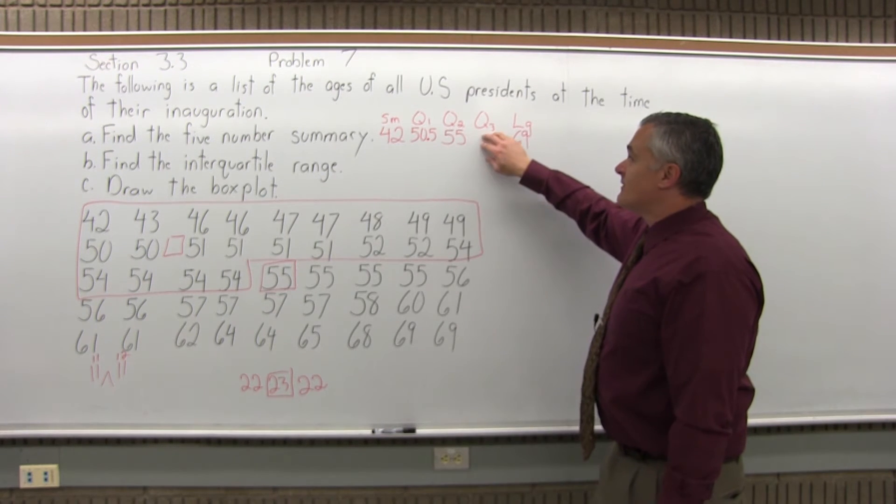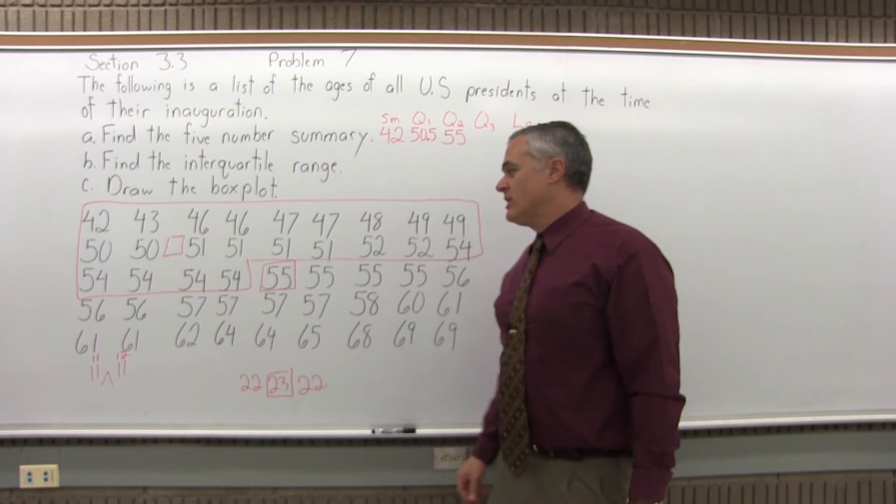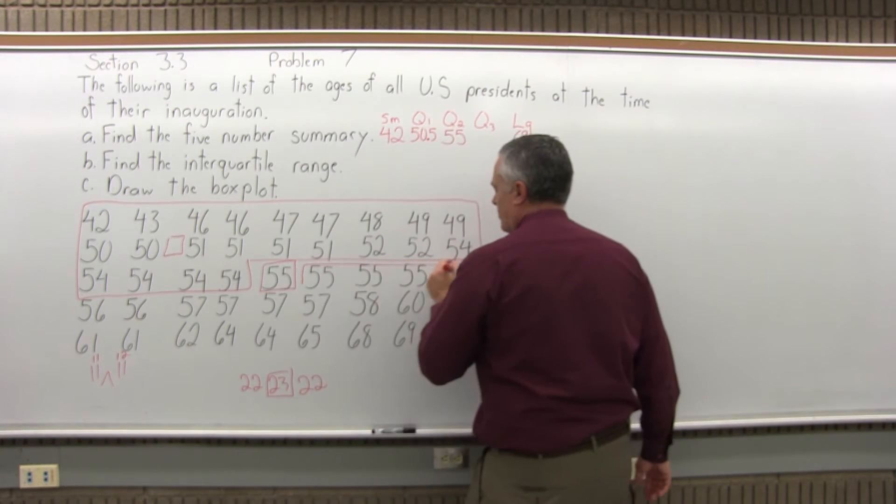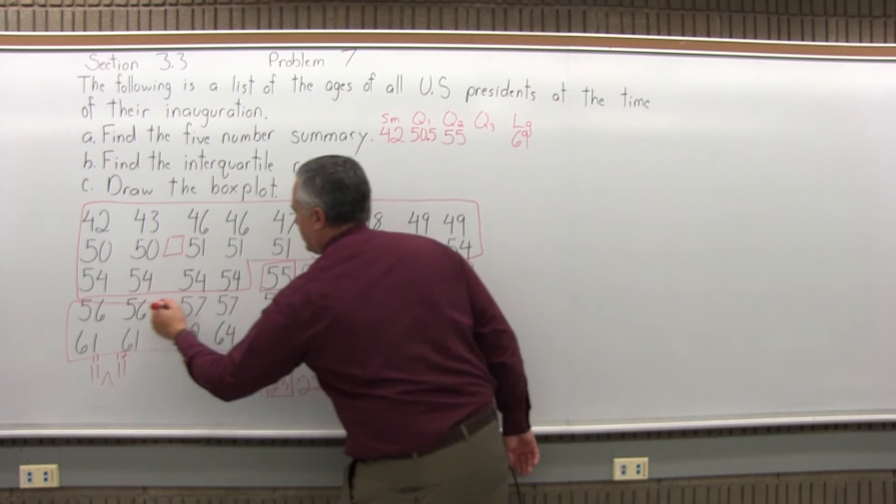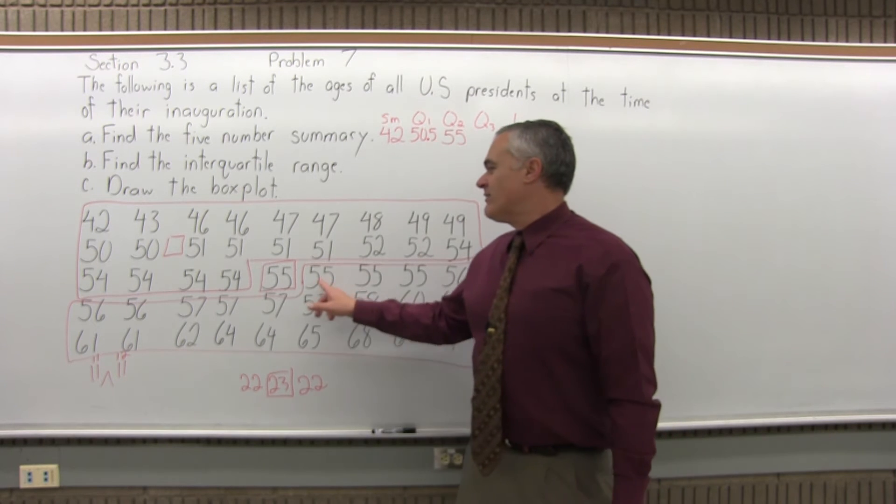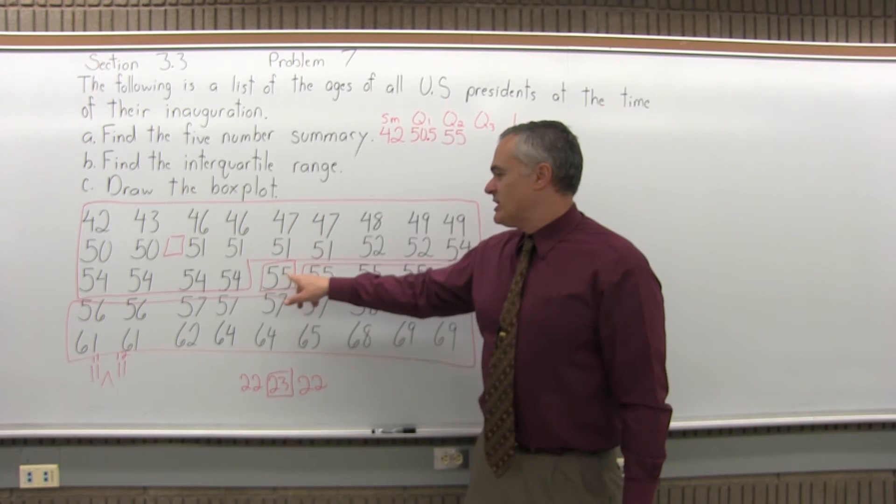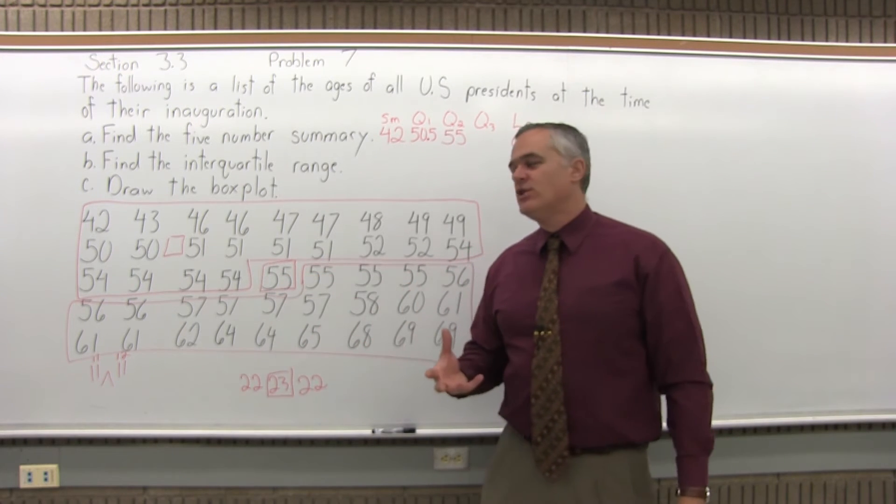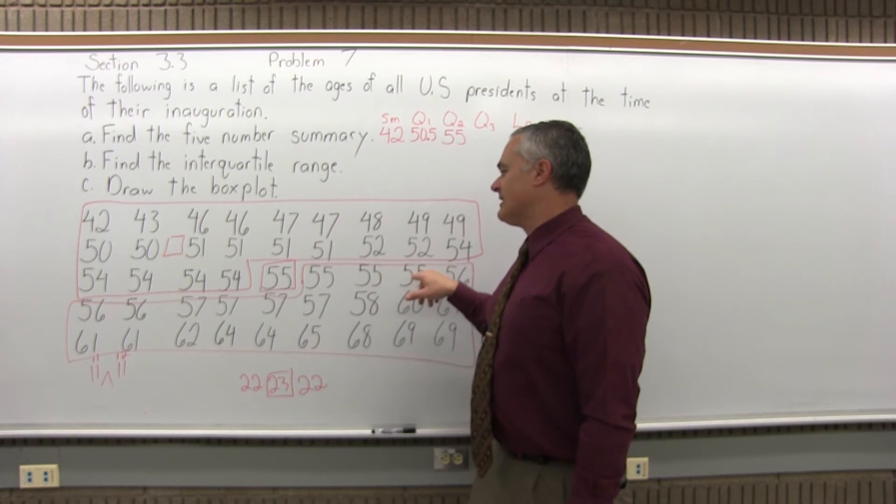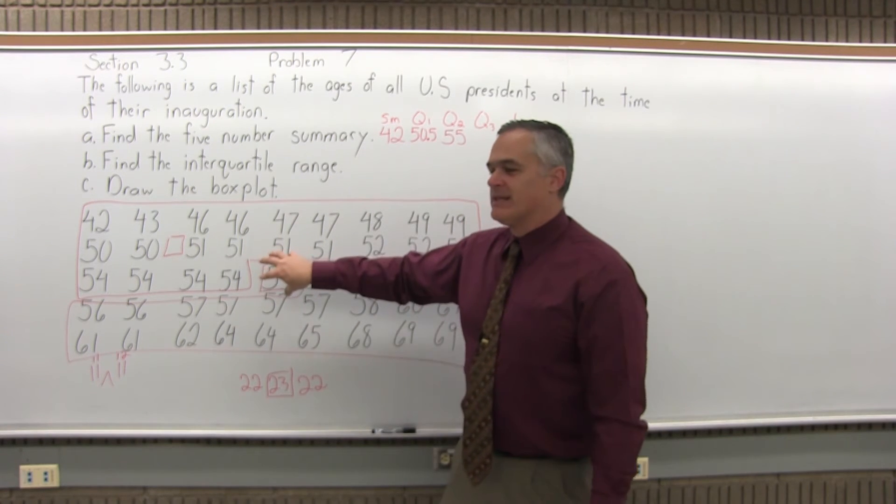It's going to be the same type of process to find Q3. Q3 will be the median of the upper half of the data, not including Q2. The upper half will be the 22 presidents that were older than that middle president at the time of their inauguration. You do have a double value, even quadruple value of 55, but it's really by position. When I say not including Q2, it's not including the value in that position. I'm not going to eliminate all those 55s, just the single 55 that's right in the center.